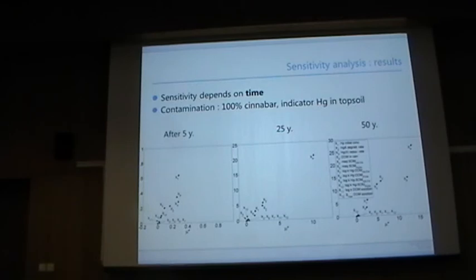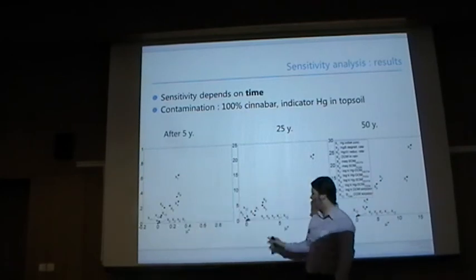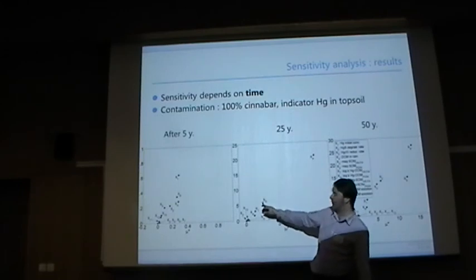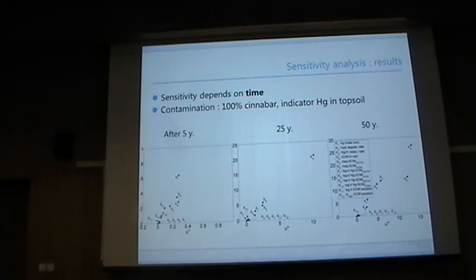This depends also on time—which parameters are important. So here it's about after 5, 25, and 50 years. And here it's for the indicator the mercury which is still in the top soil. And I want only to pay attention to parameter 9, which is the sorption capacity, or the complexation constant of the fulvic and humic acids on the organic matter. So not the thiol sites, but the other functional groups. After 5 years, this parameter is not sensitive. After 25 years, it's a little bit sensitive. But after 50 years, it's very sensitive. So in the beginning, you don't have much mercury in your aqueous phase, so everything can be on the thiol sites. But with time, these become saturated. And then, of course, the complexation constants on the other functional groups on dissolved organic matter play a more important role.